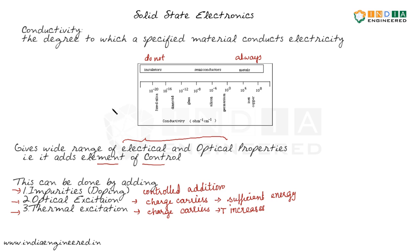To summarize: conductivity is the ability of a material to conduct electricity; we use the symbol sigma and the unit mho per centimeter. Semiconductors offer a wide range of electrical and optical properties, adding an element of control. Conductivity can be varied by doping — the controlled addition of impurities; by optical excitation, where the incident wave must have sufficient energy; and by thermal excitation. See you all in the next video.